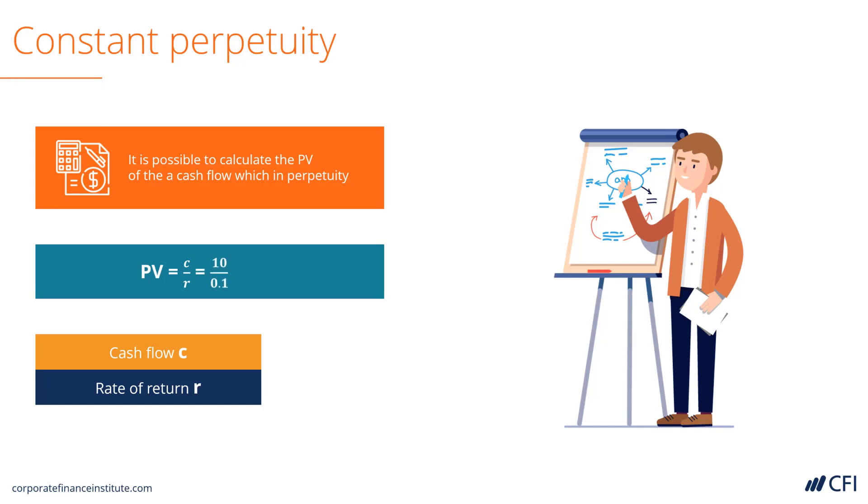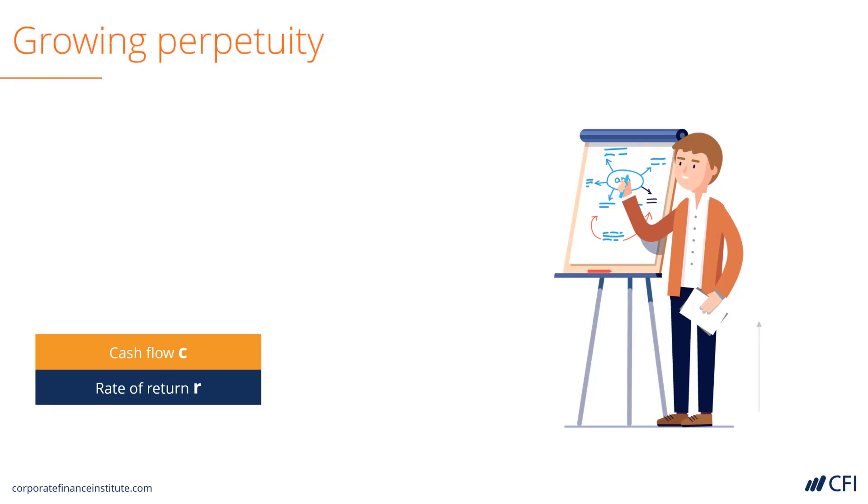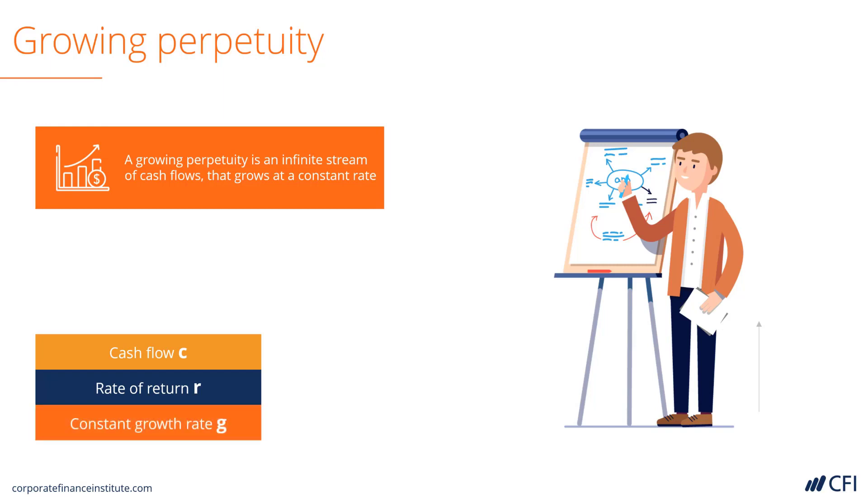A growing perpetuity is again a stream of cash flows that start one year from today and go on forever. However, the amount that we receive grows by a constant growth rate g. We can calculate the present value of a growing perpetuity by using the following formula.